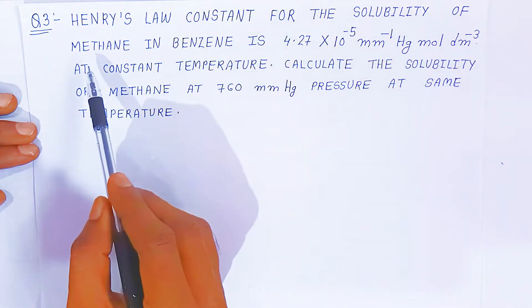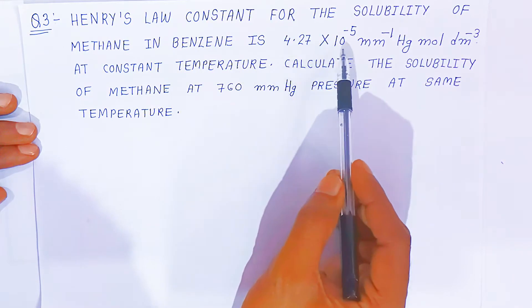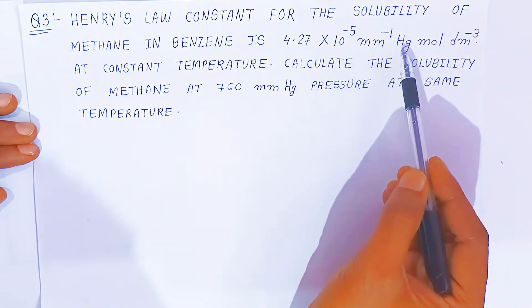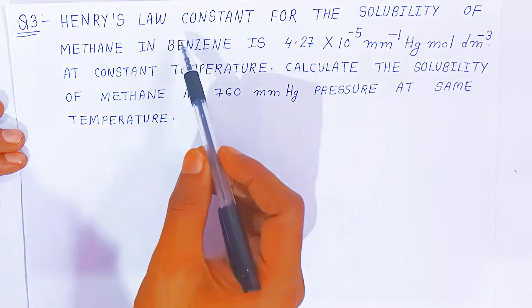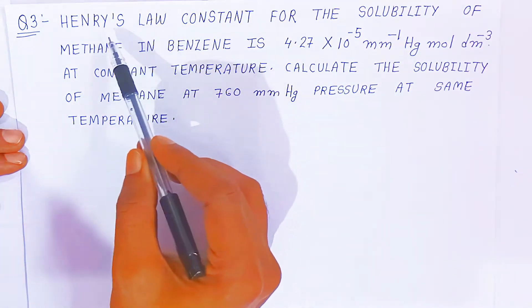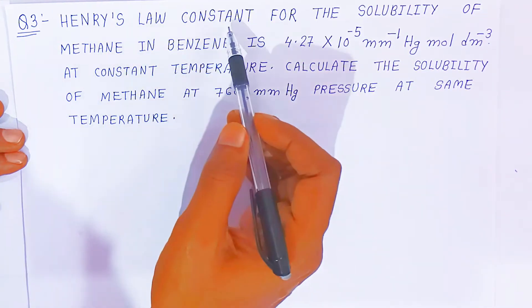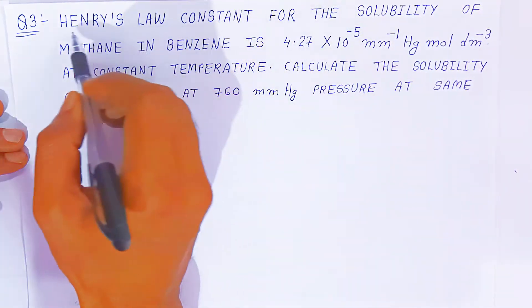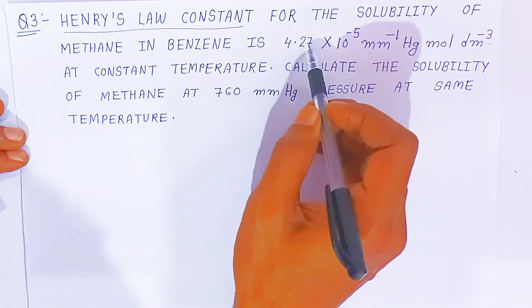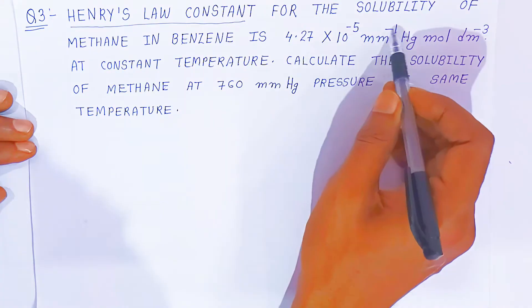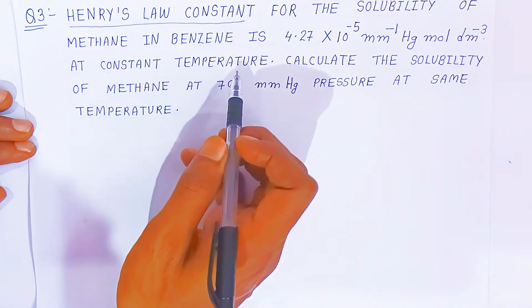Henry's Law constant for the solubility of methane in benzene is 4.27 × 10⁻⁵ per mm mercury mole per dm³ at constant temperature. So students, here what is given — Henry's Law constant KH is 4.27 × 10⁻⁵ per mm mercury mole per dm³.